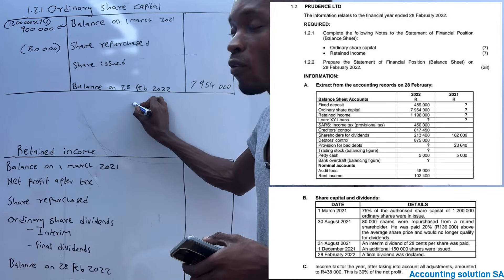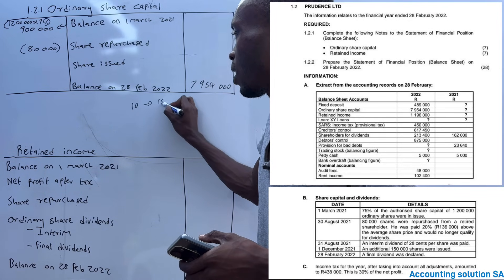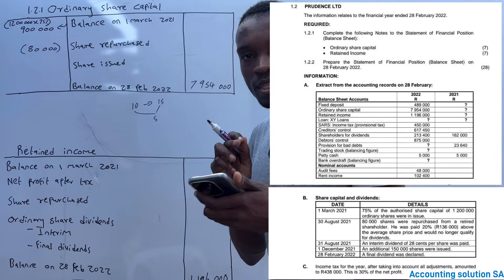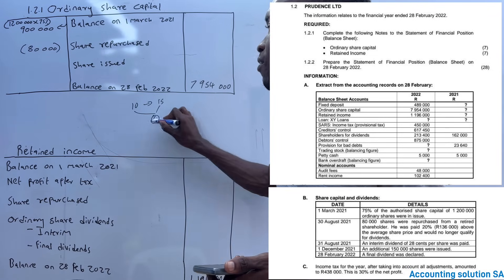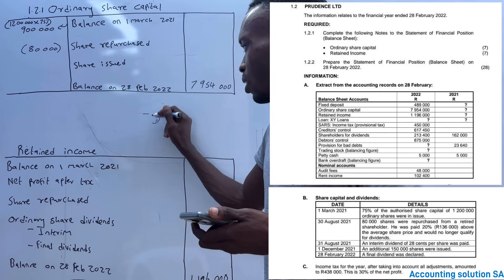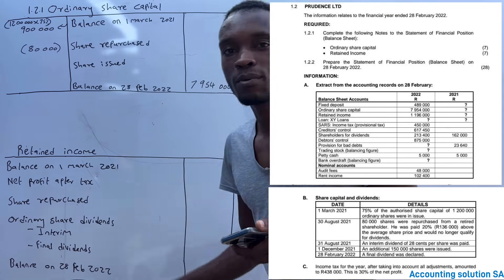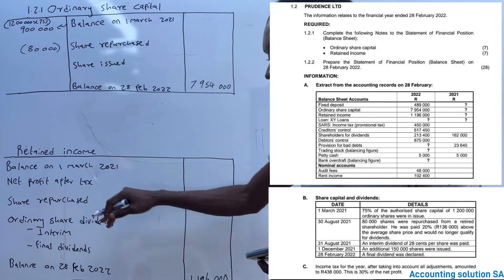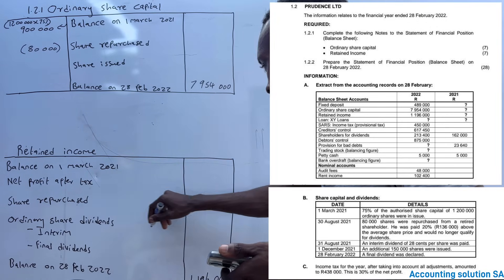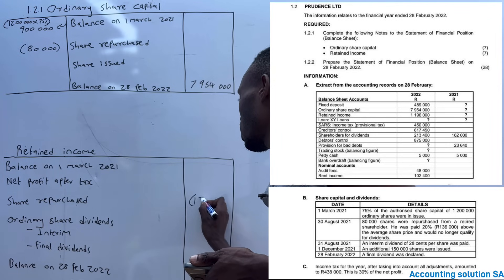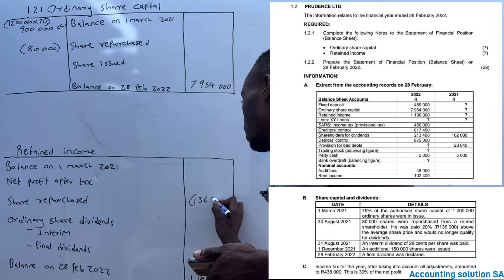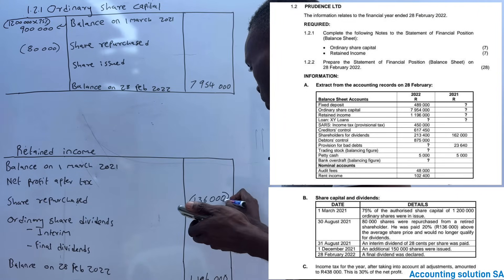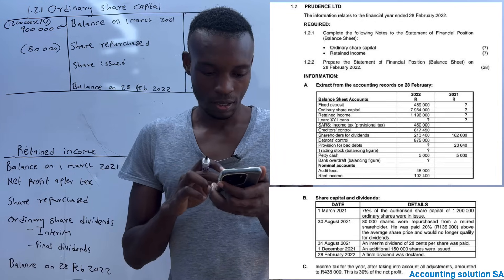It's like the cost of the share is 10 rand but we repurchase them at 15 rand, which means we make a loss of 5 rand. In other words, this 136,000 they give us is like that 5 rand - it's a loss. We record it under retained income because the loss reduces our net profit. So under repurchase in retained income we put 136,000 in brackets.